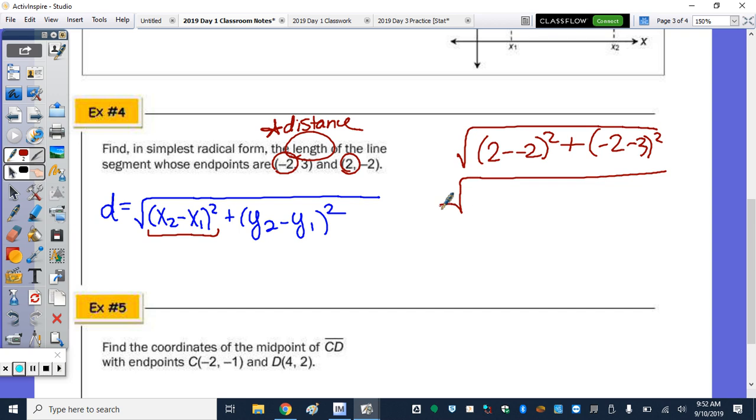2 minus negative 2 is 4. And then we're gonna square 4, 4 squared is 16. Negative 2 minus 3 is a negative 5, and a negative 5 squared is 25. So now I'm gonna find the sum of those two squares, 16 and 25, to get 41. Now the question says to leave our answer in simplest radical form. Does 41 have a perfect square factor? No, so that's our answer. So that's using the distance formula.